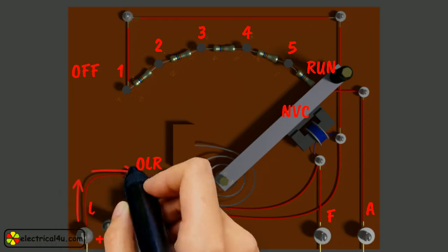The supply to the field winding is derived through no-voltage coil. So when field current flows, the NVC is magnetized. Now when the handle is in the run position, soft iron piece connected to the handle gets attracted by the magnetic force produced by NVC because of flow of current through it. The NVC is designed in such a way that it holds the handle in run position against the force of the spring as long as supply is given to the motor.